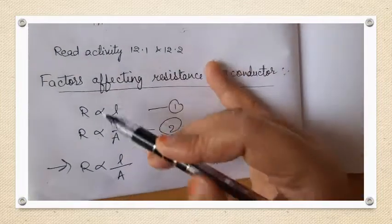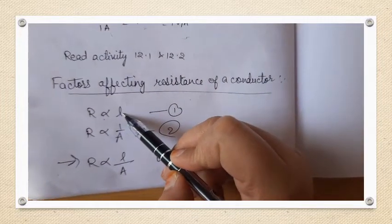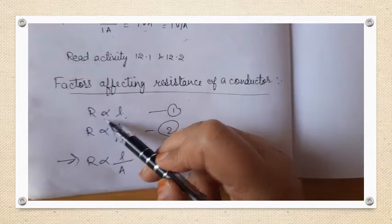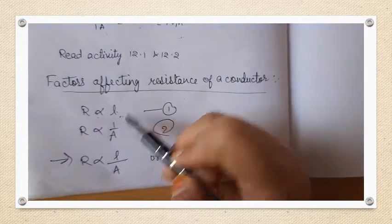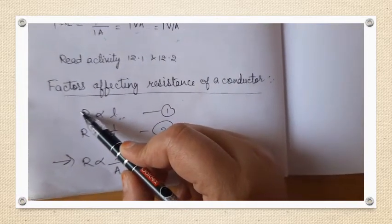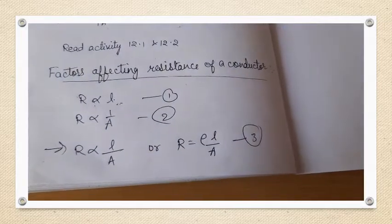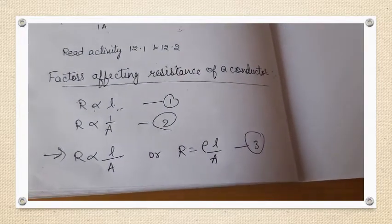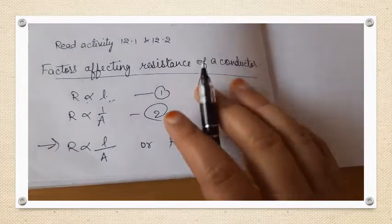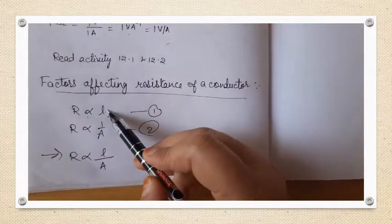The first factor on which resistance depends is the length of the conductor. Resistance is directly proportional to length — greater the length of the conductor, greater is its resistance. Resistance is the obstruction in the flow of current, so greater the resistance, less will be the current flowing through it.